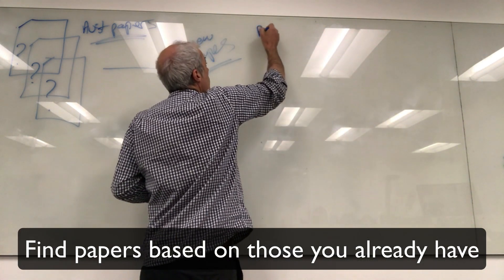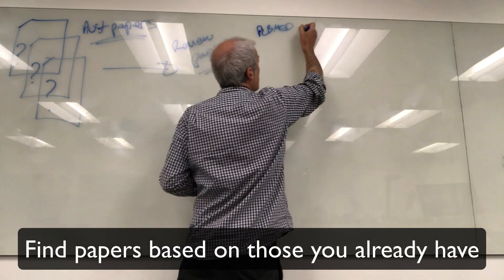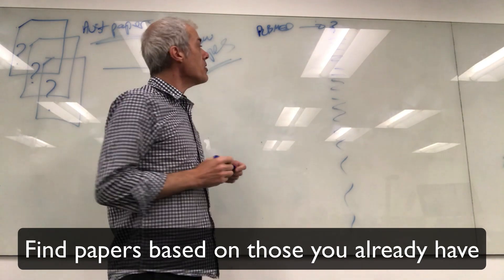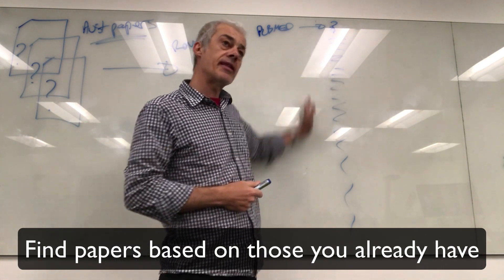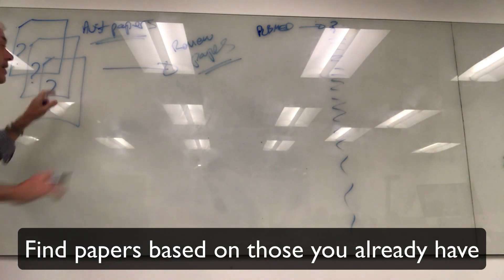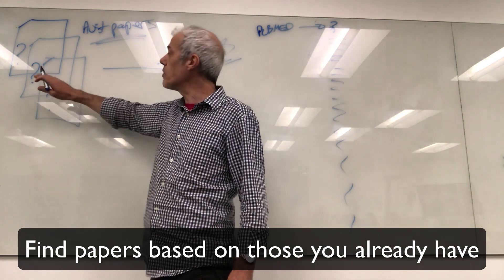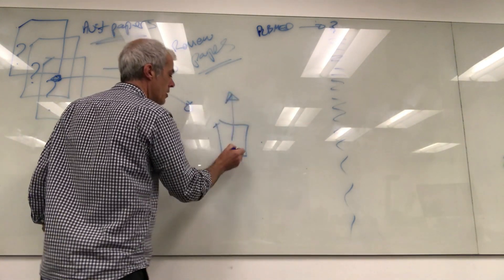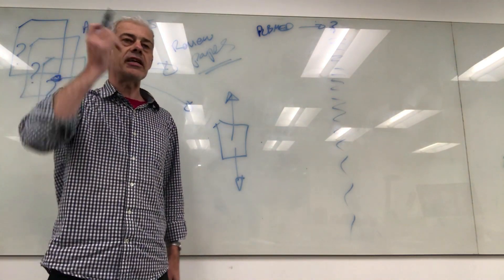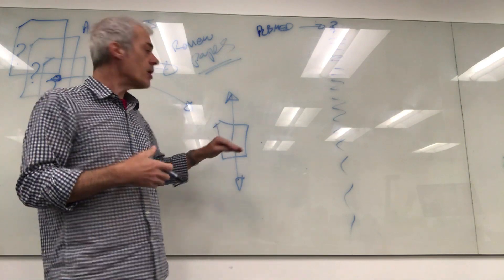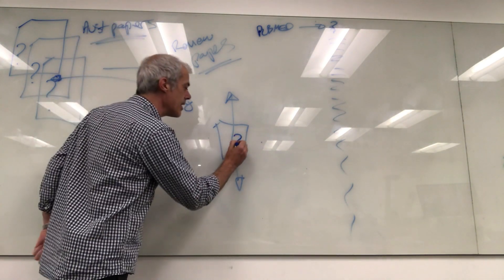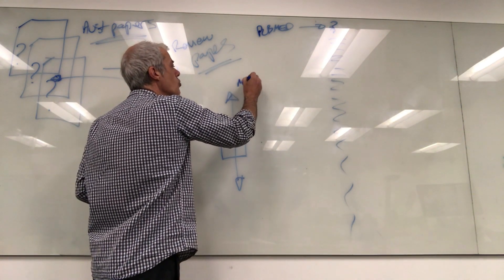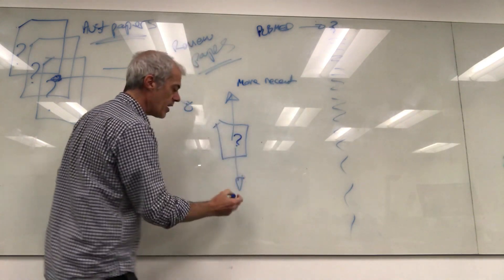Once you're happy with both of those, pursue today's activities. Rather than going into PubMed and putting in some term and getting an enormous list of papers, what I'm suggesting is that you take a paper you particularly like — a research paper here — and search forwards and backwards from it. You're using the paper you're interested in to seed your research. When you search forward you find more recent articles, and when you search backwards you find older articles.